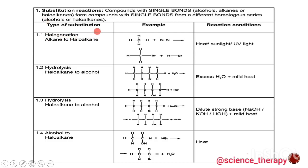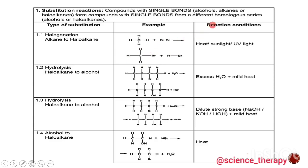Halogenation is when we take an alkane and turn it into a haloalkane. As we can see from the example, we have methane and we are reacting it with two atoms of bromine. The hydrogen will be substituted by the bromine atom, so this hydrogen reacts with the remaining bromine to give us our byproduct hydrogen bromide, and the product formed is bromomethane. The reaction condition is heat, sunlight, or UV light.